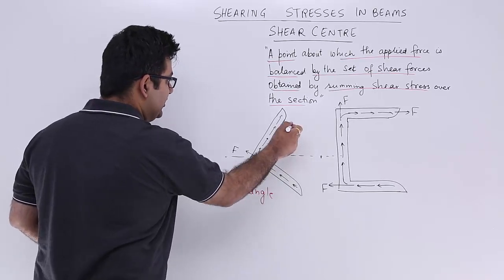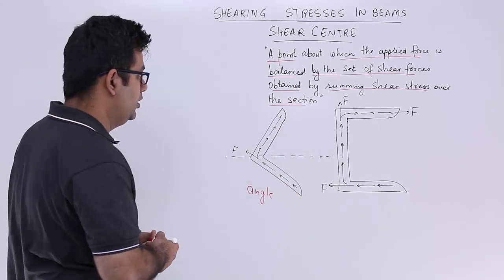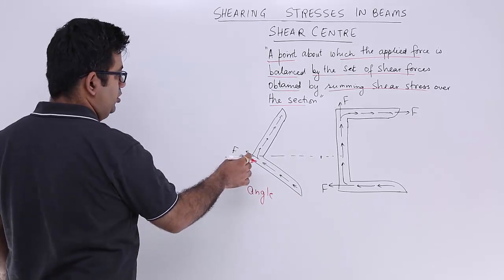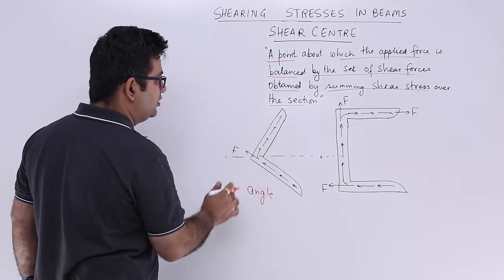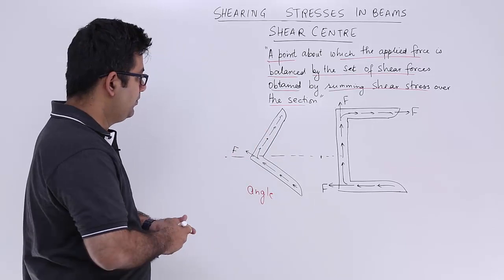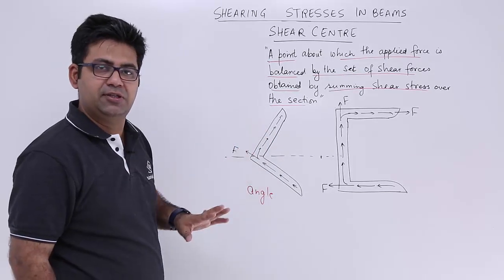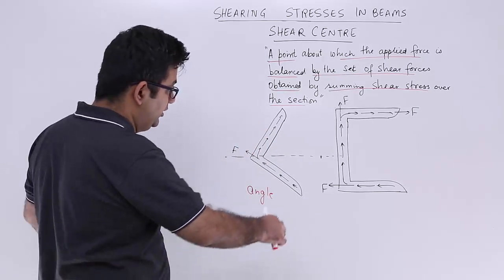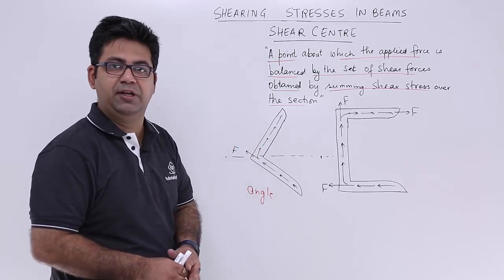Now this angle is bending. You can see these arrows which show the flow of shear stresses in this section. This is how the shear stresses are being developed in the directions.